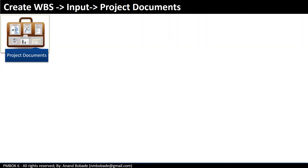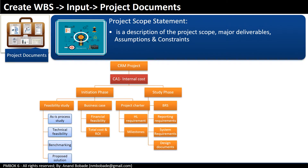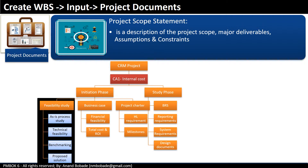Project documents required as inputs are the project scope statement and requirements documentation. The project scope statement is a description of project scope, major deliverables, assumptions and constraints. You take deliverables from the project scope statement and decompose them into smaller, more manageable components. For example, a deliverable like feasibility study report was decomposed into work packages like as-is process study, technical feasibility, benchmarking, and proposed solution. In a house construction project, main deliverables include foundation, building structure, rooms, and swimming pool. A deliverable like swimming pool can be further divided into construction of the swimming pool, setting a temperature control system, etc.